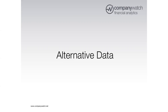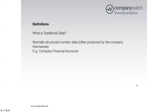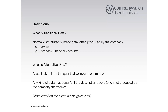Thanks, Adam. Adam has given a very good introduction to the sources of financial analysis that traditionally underpin credit risk. Now I'm going to dive into some of the newer forms of alternative data. First, we have to define what we mean by alternative data. Traditional data is typically numerical, structured, and in the form of the company's financial accounts or stock prices. Alternative data — a label borrowed from quantitative investment funds — is a fairly broad term for any data that doesn't fit that description.